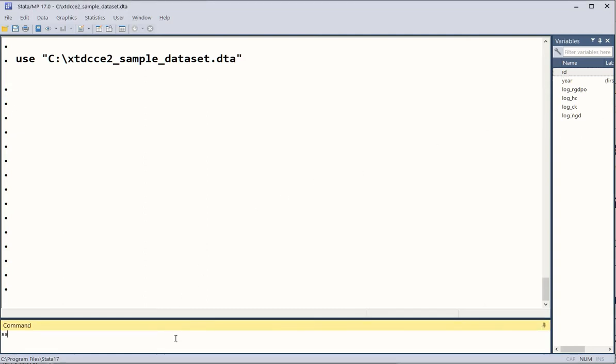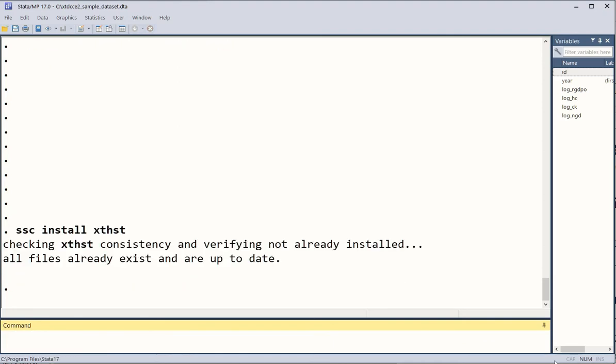Now the first thing that we should do is to see if it is installed or not. We are going to install this command and run this install command, ssc install xthst, homogeneous slope test HST. So when I click enter, it is installing. As you can see the progress circle was there and it says that it is already up to date. There is no need for any update in it.